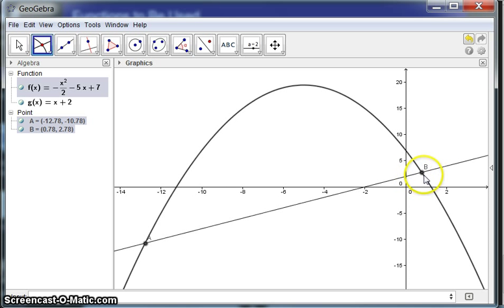And what's happening is, in this graphics view, we see the two points of intersection. In the algebra view, you can see the coordinates of those two points of intersection.